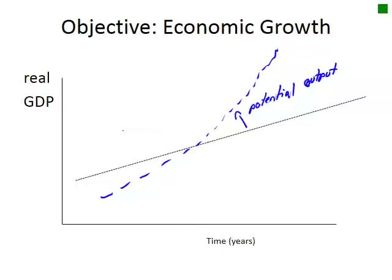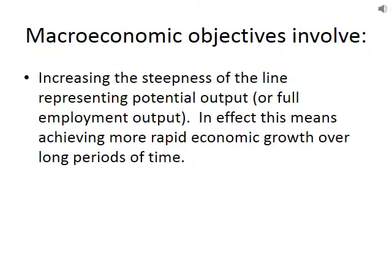Another macroeconomic objective is economic growth. If this is our potential output, we'd want it to be growing faster — increasing the steepness of the line representing potential output or full employment output. In effect, this means achieving more rapid economic growth over long periods of time, and we'll look at how to achieve economic growth in a few lessons.